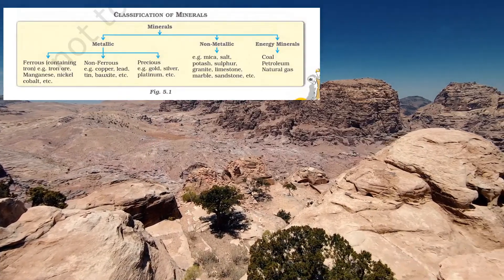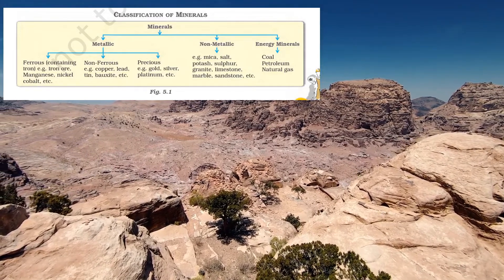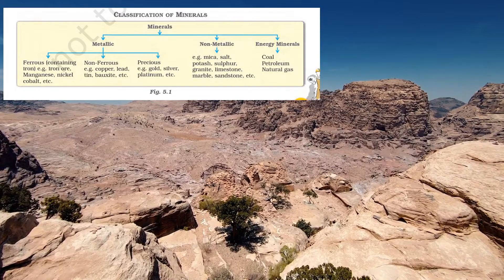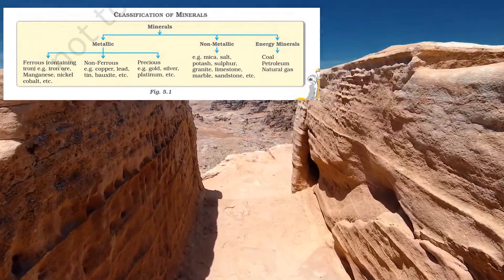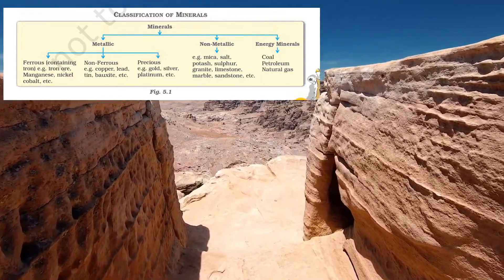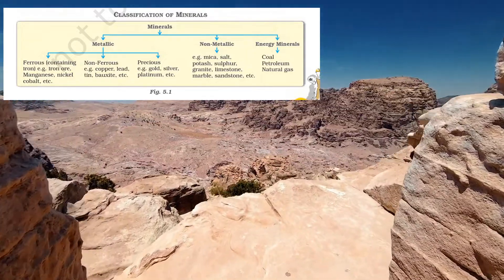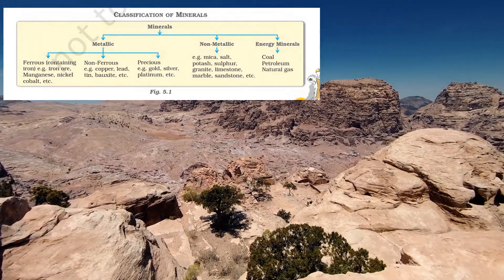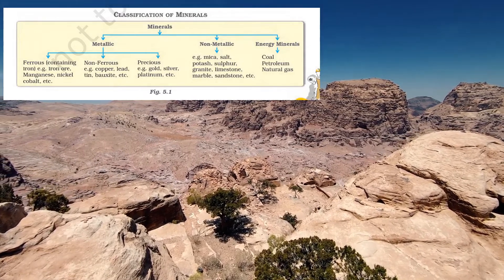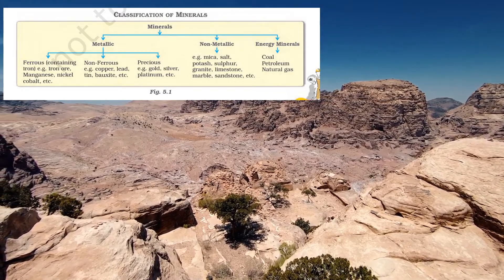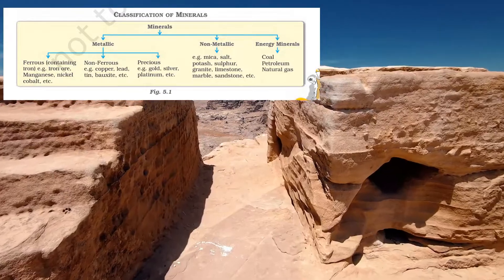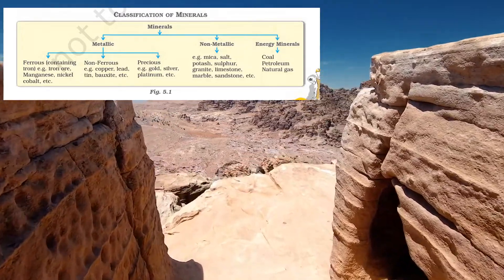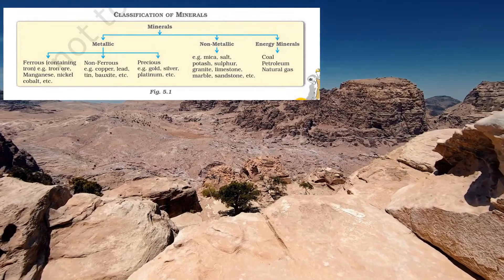Classification of minerals: Minerals can be classified into three types on the basis of their composition — metallic minerals, non-metallic minerals, and energy minerals. Metallic minerals are further classified as ferrous minerals (which contain iron, e.g. iron ore, nickel), non-ferrous minerals (which do not contain iron, e.g. copper, tin), and precious minerals (e.g. gold, silver). Non-metallic minerals include mica, salt, potash, granite, limestone, sulfur, marble, etc. Energy minerals are the sources of energy, e.g. coal, petroleum and natural gas.